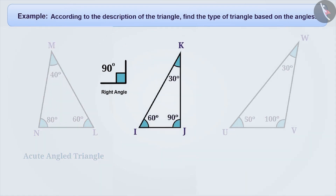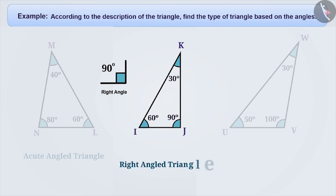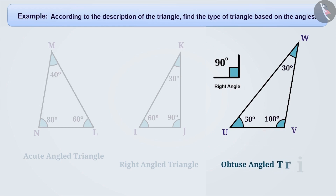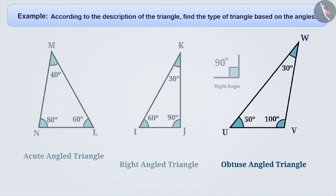From the description provided for triangle IJK, we understand that angle J is a right angle. A triangle in which there is one right angle is called a right angle triangle. Therefore, triangle IJK is a right angle triangle. From the description provided for triangle UVW, we understand that angle V is greater than a right angle, which means it is an obtuse angle. Therefore, we call this triangle an obtuse angle triangle.